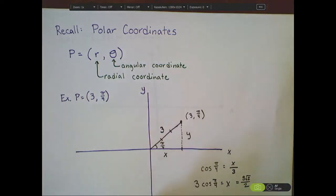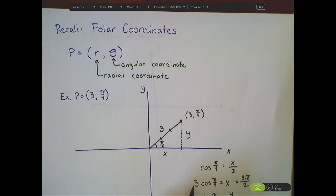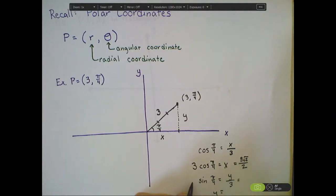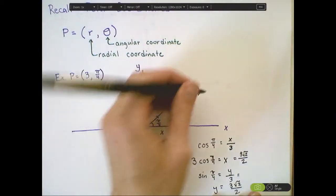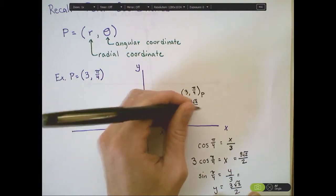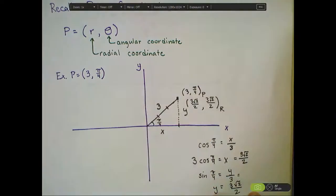Similarly, the distance in the y direction is going to be the sine of the angle π/4 equals y over 3, or 3 is the hypotenuse, which yields the fact that y, in this case, is going to be 3 times the sine of π/4, which is 3 times √2/2. So this point in polar coordinates would be rewritten as (3√2/2, 3√2/2) in rectangular coordinates.